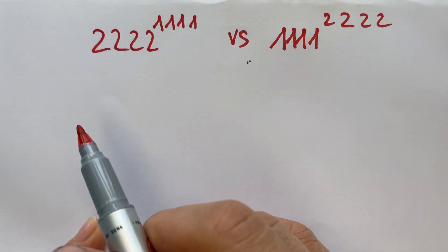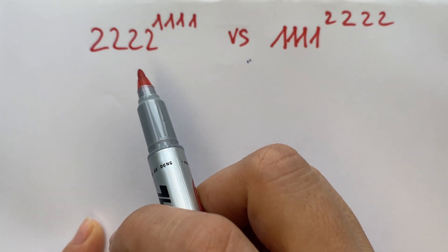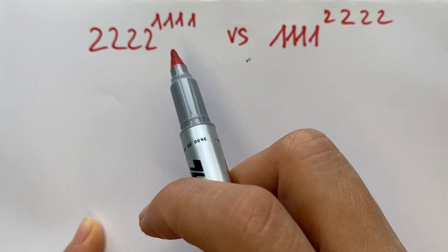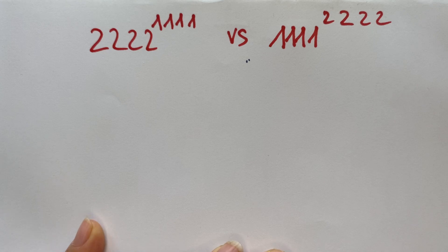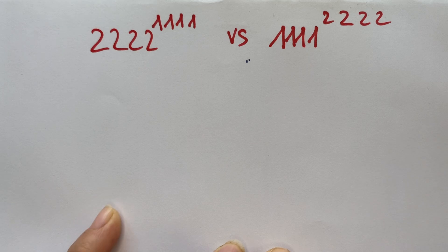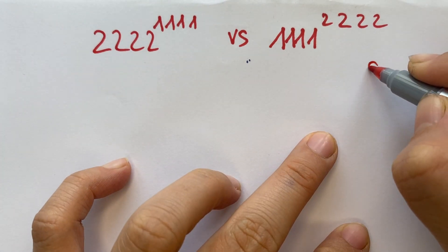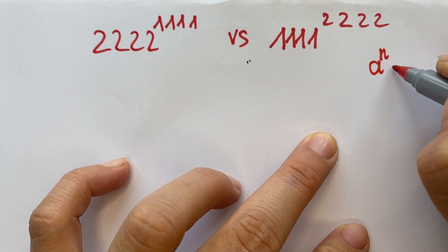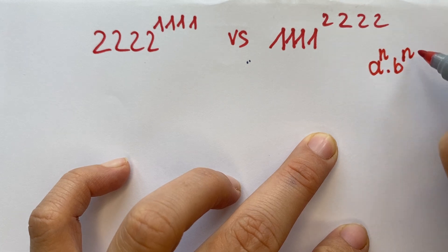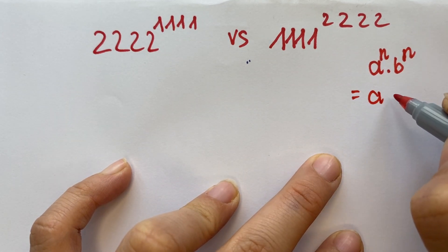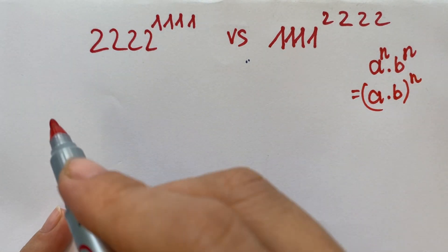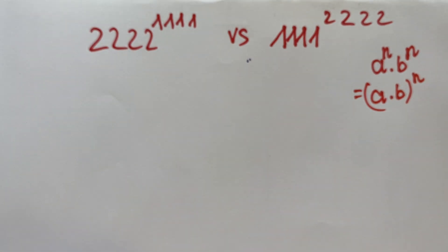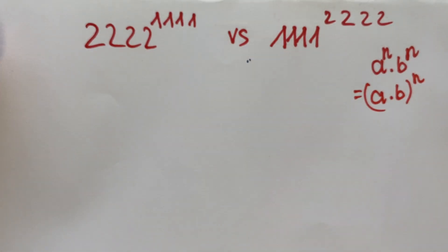Hello everyone. How to compare 2222 to the power of 1111 versus 1111 to the power of 2222? Firstly, we can apply the exponential rule: a^n times b^n is equal to (a times b)^n. Now look at 2222 to the power of 1111.